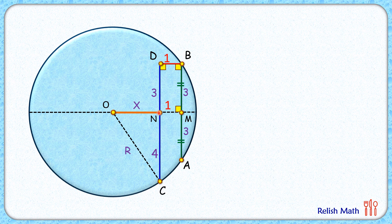Now if you look at triangle ONC, it's a right angle triangle. Applying Pythagoras theorem, we get the hypotenuse squared, that is R² = X² + 4². In the same way, if we join OA...